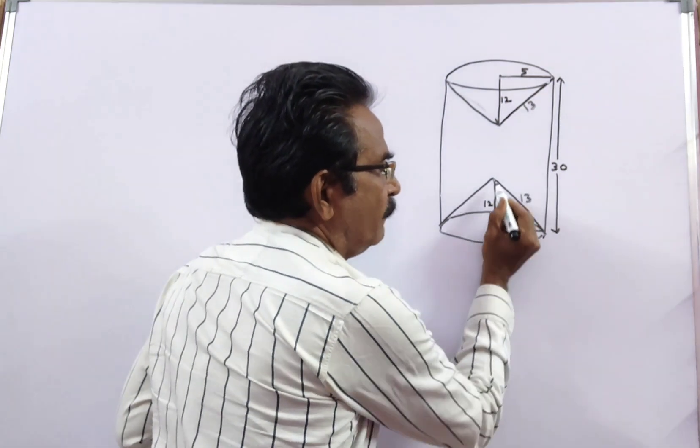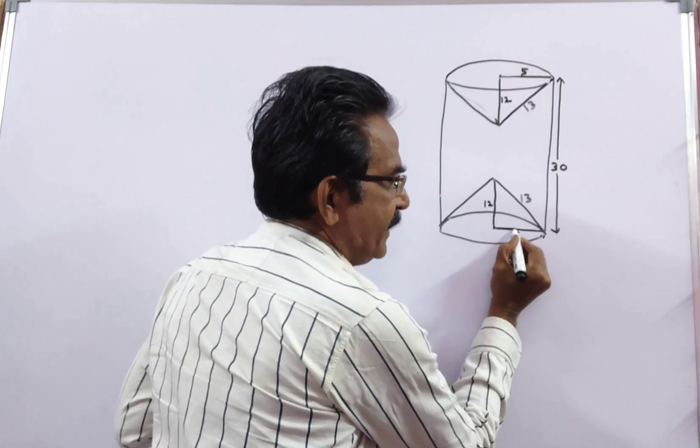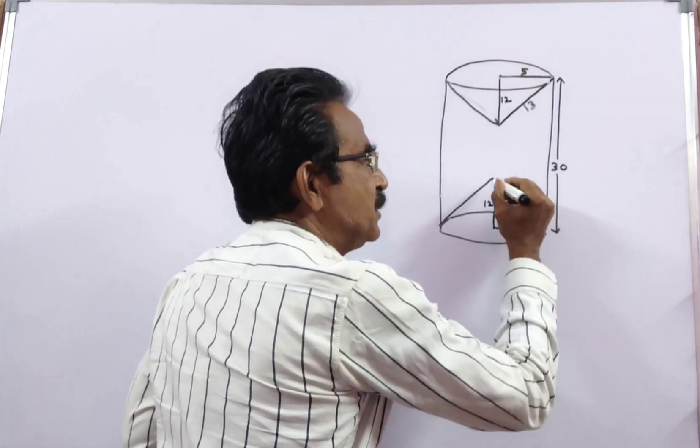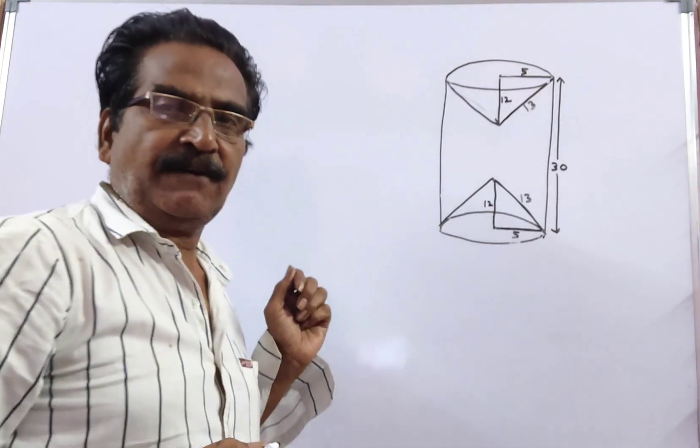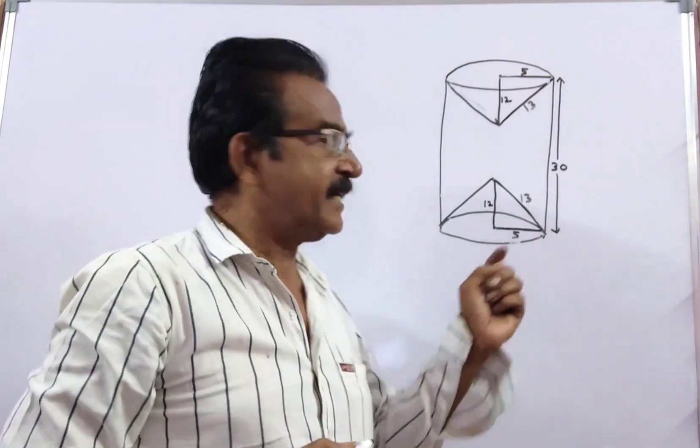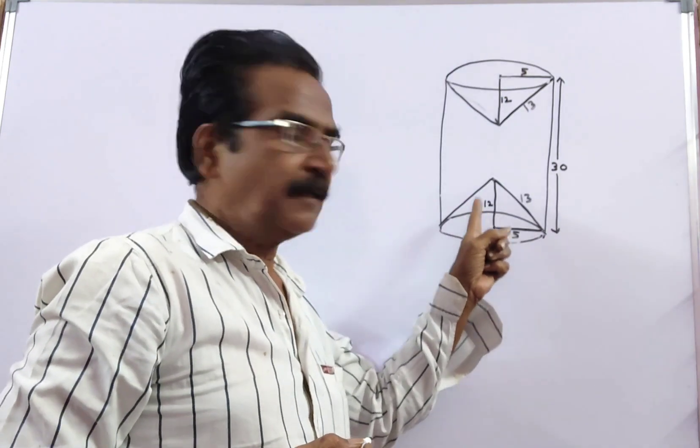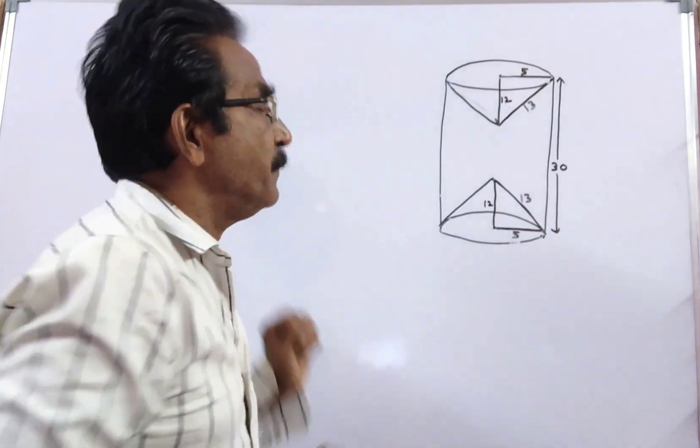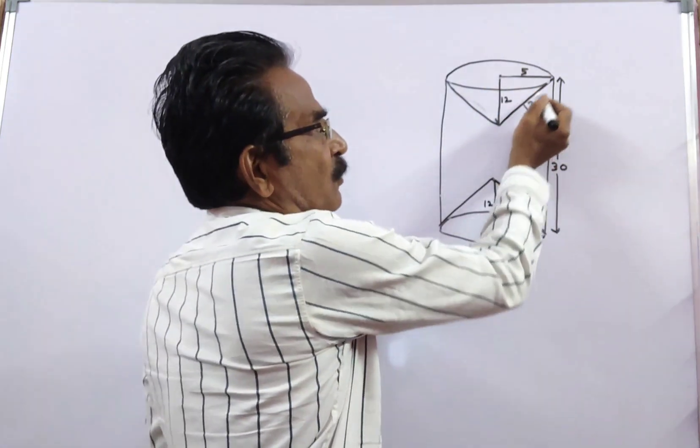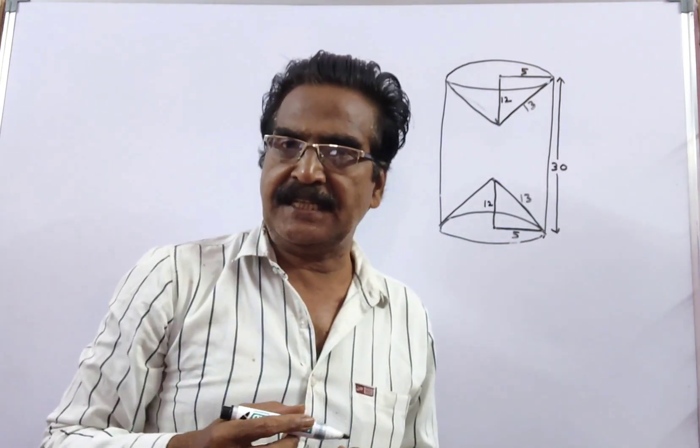The height of this conical cavity is 12 centimeters and radius 5 centimeters, so the slant height of this conical cavity is 13 centimeters. Root of 12 square plus 5 square: 144 plus 25 equals 169, which is 13. In the same way, this is also 13 centimeters.